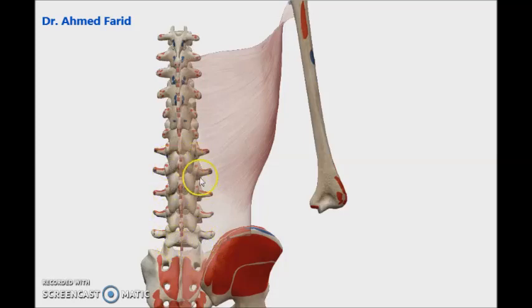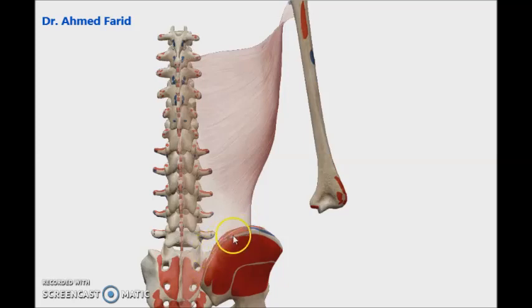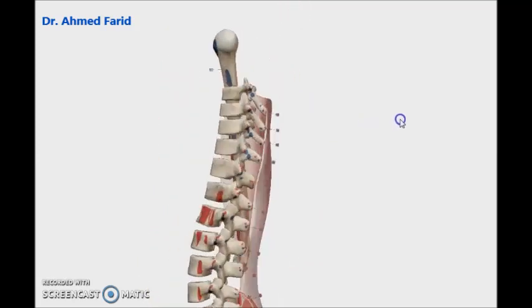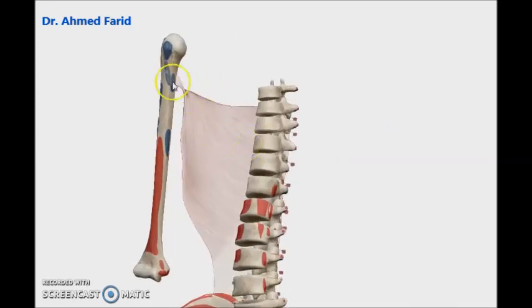The upper part of latissimus dorsi is covered by the lower part of trapezius. The other origin is the thoracolumbar fascia, which attaches the lumbar vertebrae with each other. The third origin is the back of the iliac crest of the hip bone. As the muscle ascends upward toward the humerus, it can take some slips of origin from the lower ribs and from the back of the lower angle of the scapula.